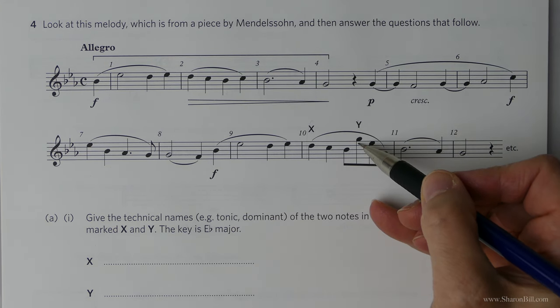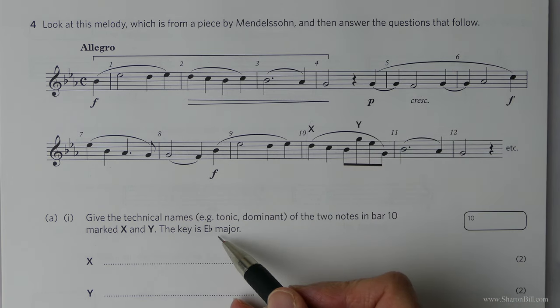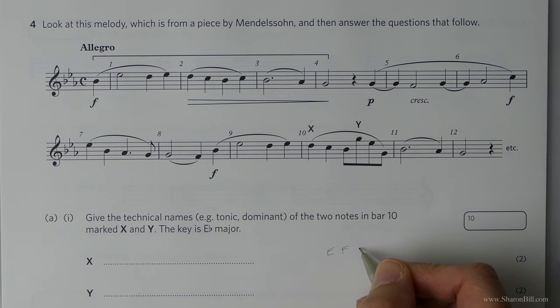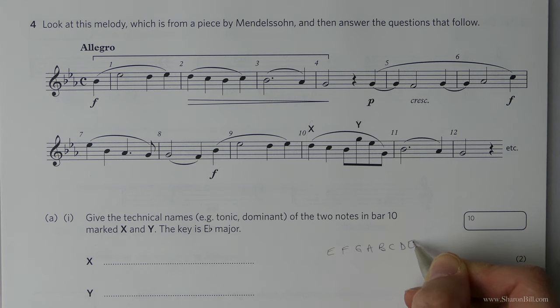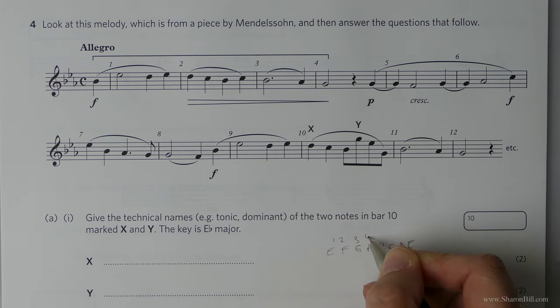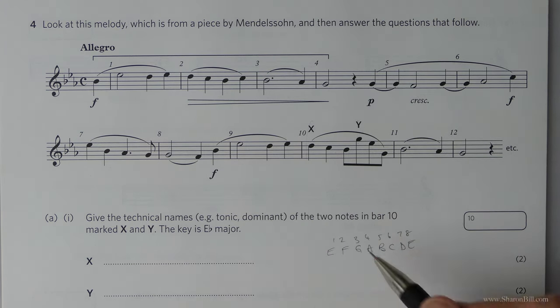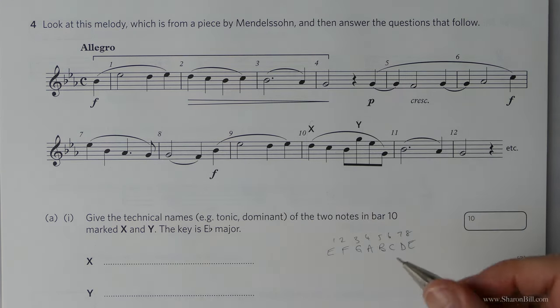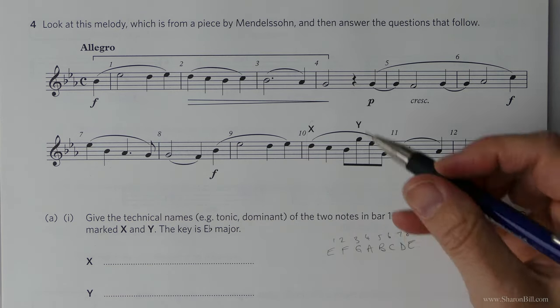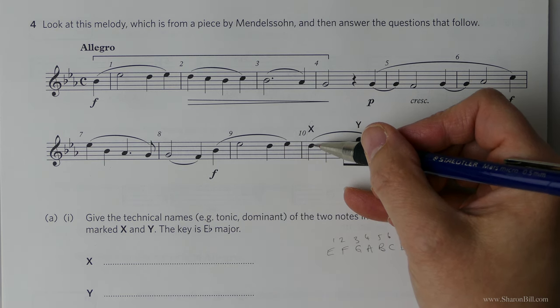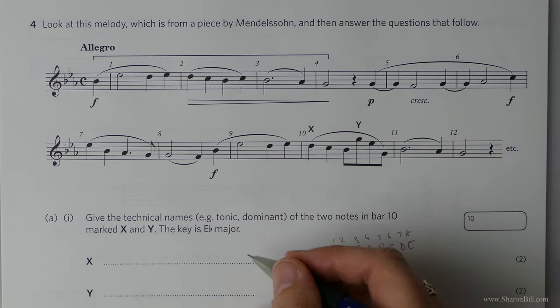We're asked to give the technical names of the two notes in bar 10 marked X and Y, here and here. We're in E-flat major. So before we do that, I'm just going to step out the degrees of the scale here: 1, 2, 3, 4, 5, 6, 7, 8. I know that there's a key signature but we don't bother. The key signature does all the work for us. So in the treble clef, this is a D, and we know that D is the seventh.